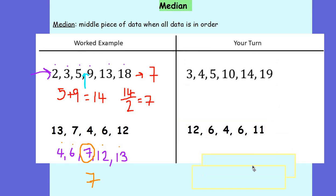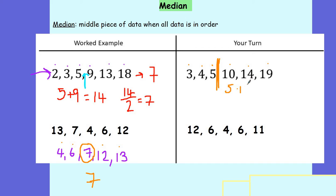Over to you guys in your dark blue books. Pause the video for two minutes and work out the median for these two examples. We start with the first one where they're already in order. We count from each end — one from each end, two from each end, and three from each end. So we know our median lies between those two numbers in the middle. I need to do 5 plus 10, which gives me 15. Then to find the midpoint, I do 15 divided by 2, which gives me 7.5. So that's the median for the first set of values.